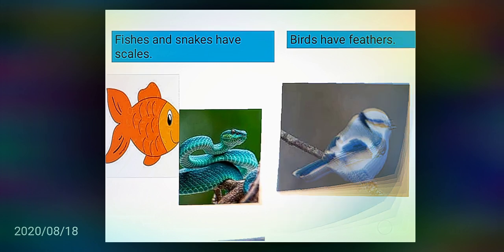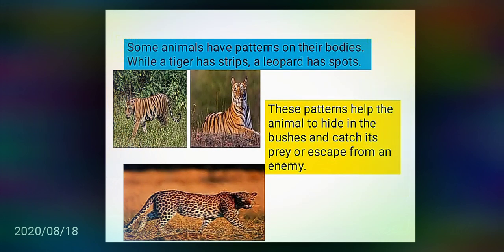Some animals have patterns on their bodies. While a tiger has stripes, a leopard has spots. This pattern helps the animal to hide in the bushes and catch its prey or escape from an enemy.